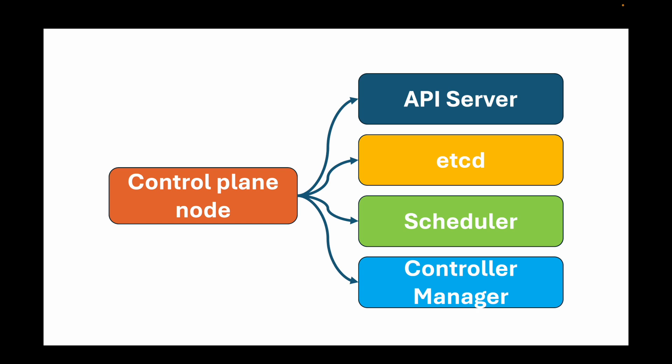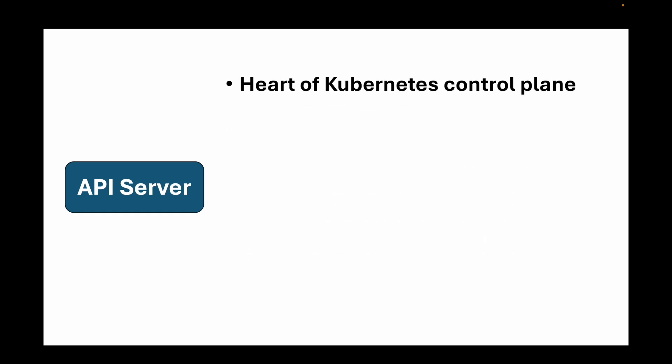First, let's talk about the API server. The API server is the heart of your Kubernetes control plane — it's the main component which helps your control plane talk to the worker nodes and get work done. The API server acts as the front door through which all cluster operations are performed. Whether you want to create a pod, a deployment, or a service, the API server acts as the front door for all those operations.